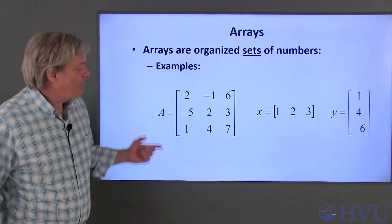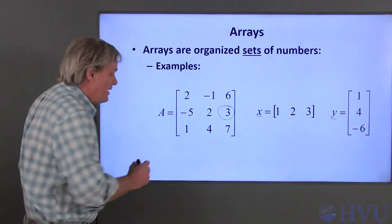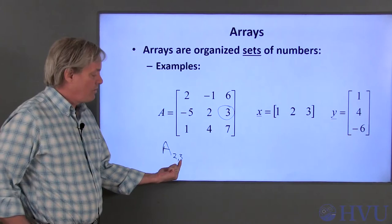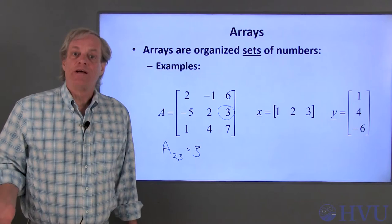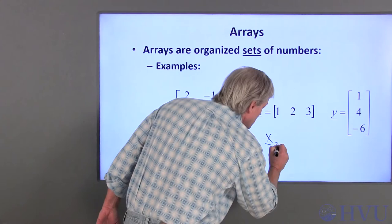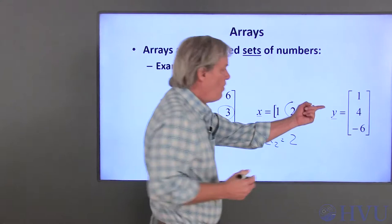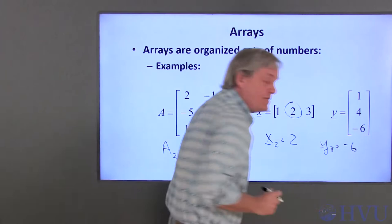For example, the element of A in the second row and the third column is 3. This would be expressed as A, second row, third column, and that is the number 3. Elements in one-dimensional arrays are generally referred to with only one subscript. So X sub 2 will be the second element in X, which is the number 2. Y sub 3 will be the third element in Y, which is negative 6.